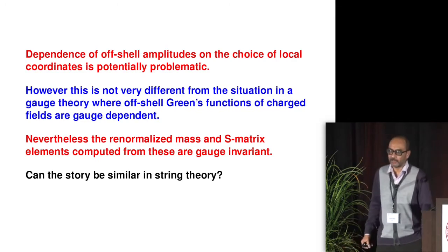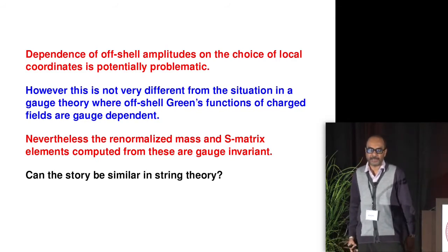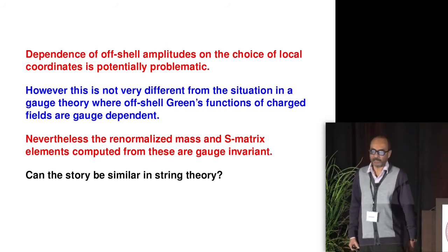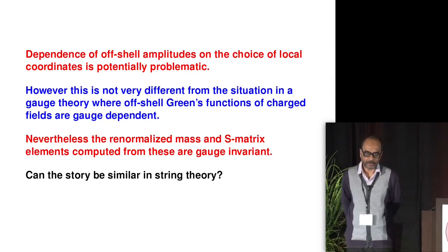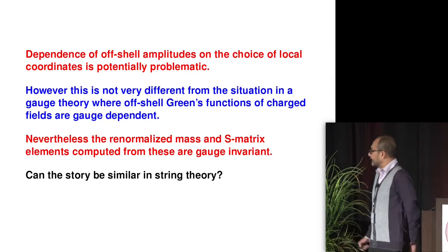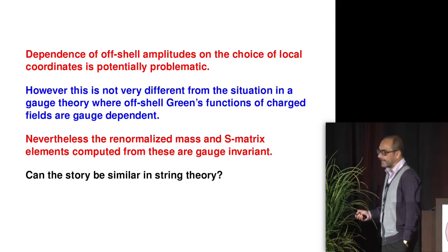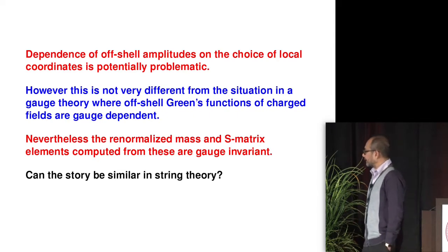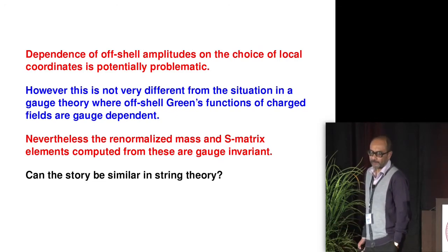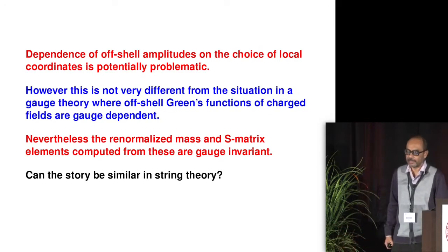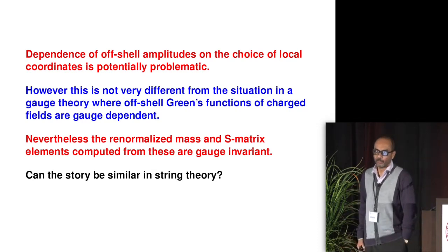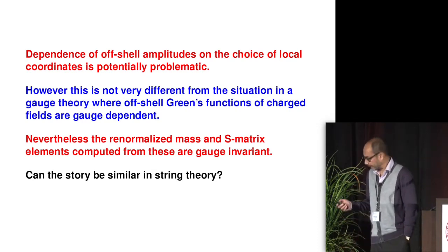This is potentially problematic, but if one thinks about it, perhaps it's not such a bad thing after all. This is not very different from the situation in gauge theory, where off-shell Green's functions of charged fields are gauge dependent. In quantum electrodynamics, the electron off-shell Green's function is a gauge-dependent object. Nevertheless, one knows how to extract physical quantities from this — in particular, the renormalized mass and S-matrix elements are gauge invariant. One might ask: can the story be similar in string theory? Perhaps off-shell amplitudes depend on the choice of local coordinates, but maybe the physical quantities are independent of that choice.